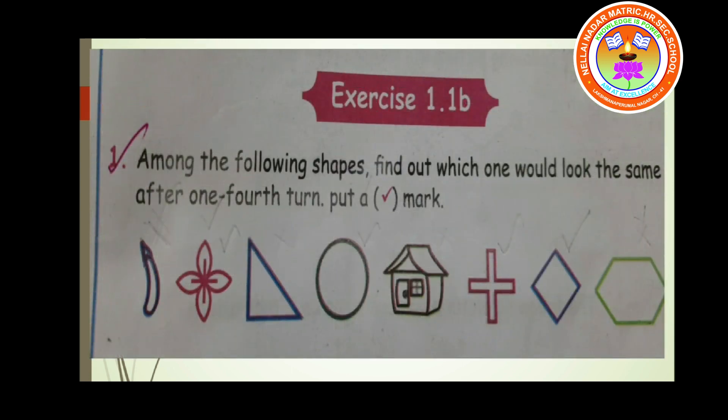Problem number one: among the following shapes, find out which one would look the same after a one-fourth turn. Put a tick mark. When you rotate these shapes one-fourth — that means 90 degrees, tilted to the right side — we have to find whether the shape looks the same or not. Let us move on to each shape.